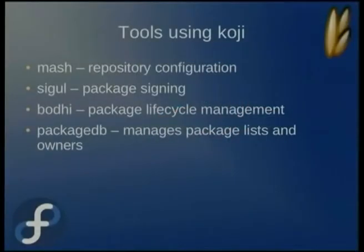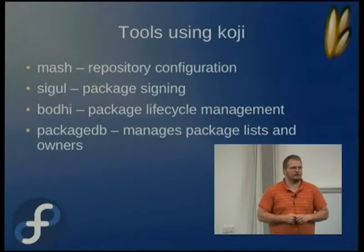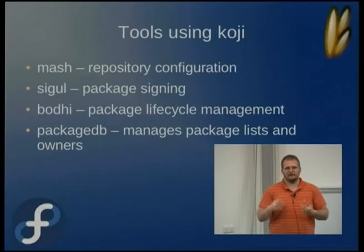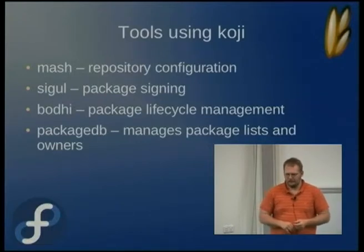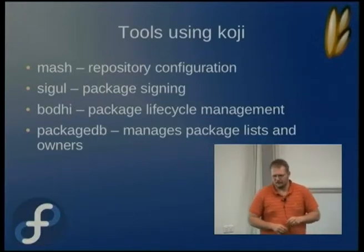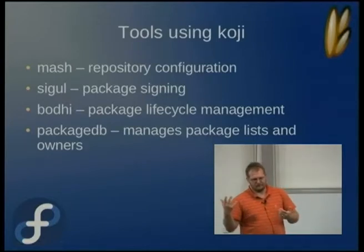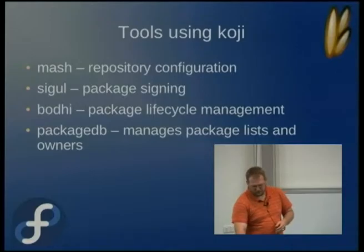There are a bunch of tools that use Koji. MASH is a repository generation tool. SIGL is a tool for signing your RPMs. Bodei is a package lifecycle management tool that allows you to transition packages through states of testing and going to stable. And the package database manages package lists and who's responsible for each package.